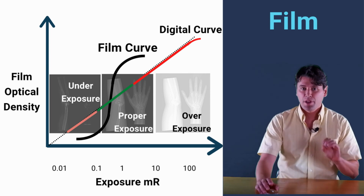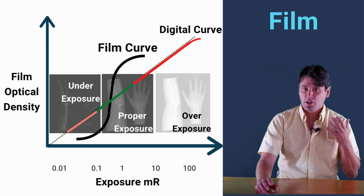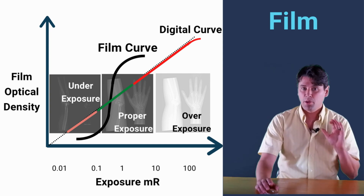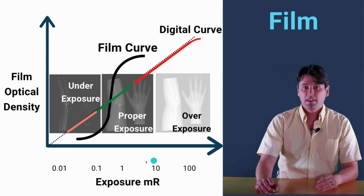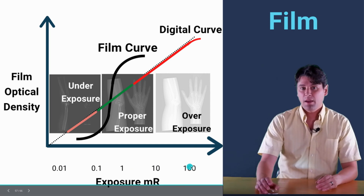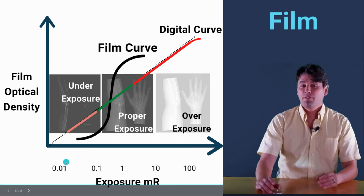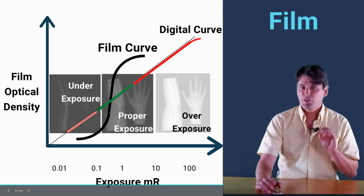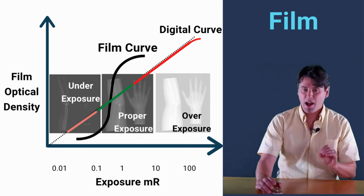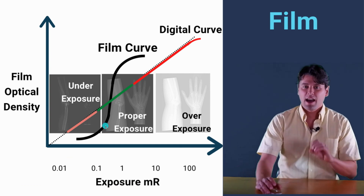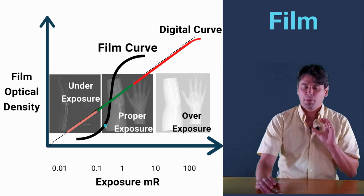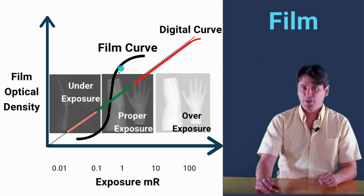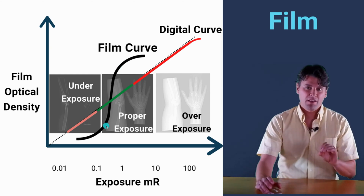The real benefit of digital imaging, which includes both CR and DR, is the ability over a wide dynamic range to visualize images properly. It's not limited by the narrow exposure range of film. We're going to be talking about both advantages and disadvantages of this wider dynamic range.